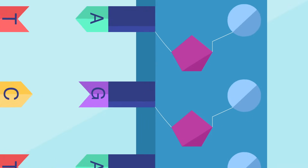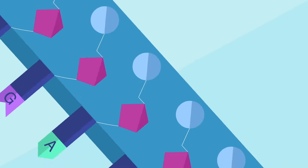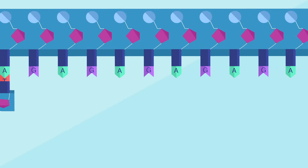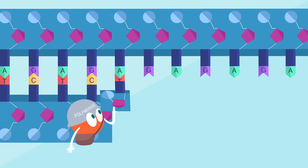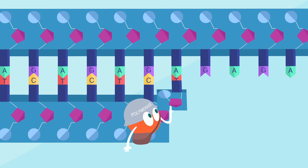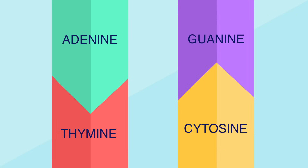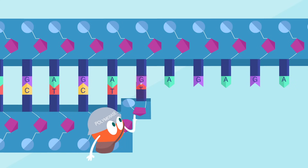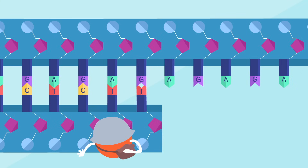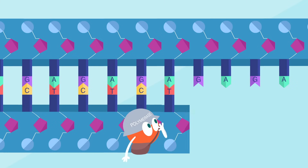One common error is base mismatches. Each nucleotide contains a base, and during DNA replication, the enzyme DNA polymerase is supposed to bring in the right partner to pair with every base on each template strand — adenine with thymine and guanine with cytosine. But about once every 100,000 additions, it makes a mistake. The enzyme catches most of these right away, and cuts off a few nucleotides and replaces them with the correct ones.